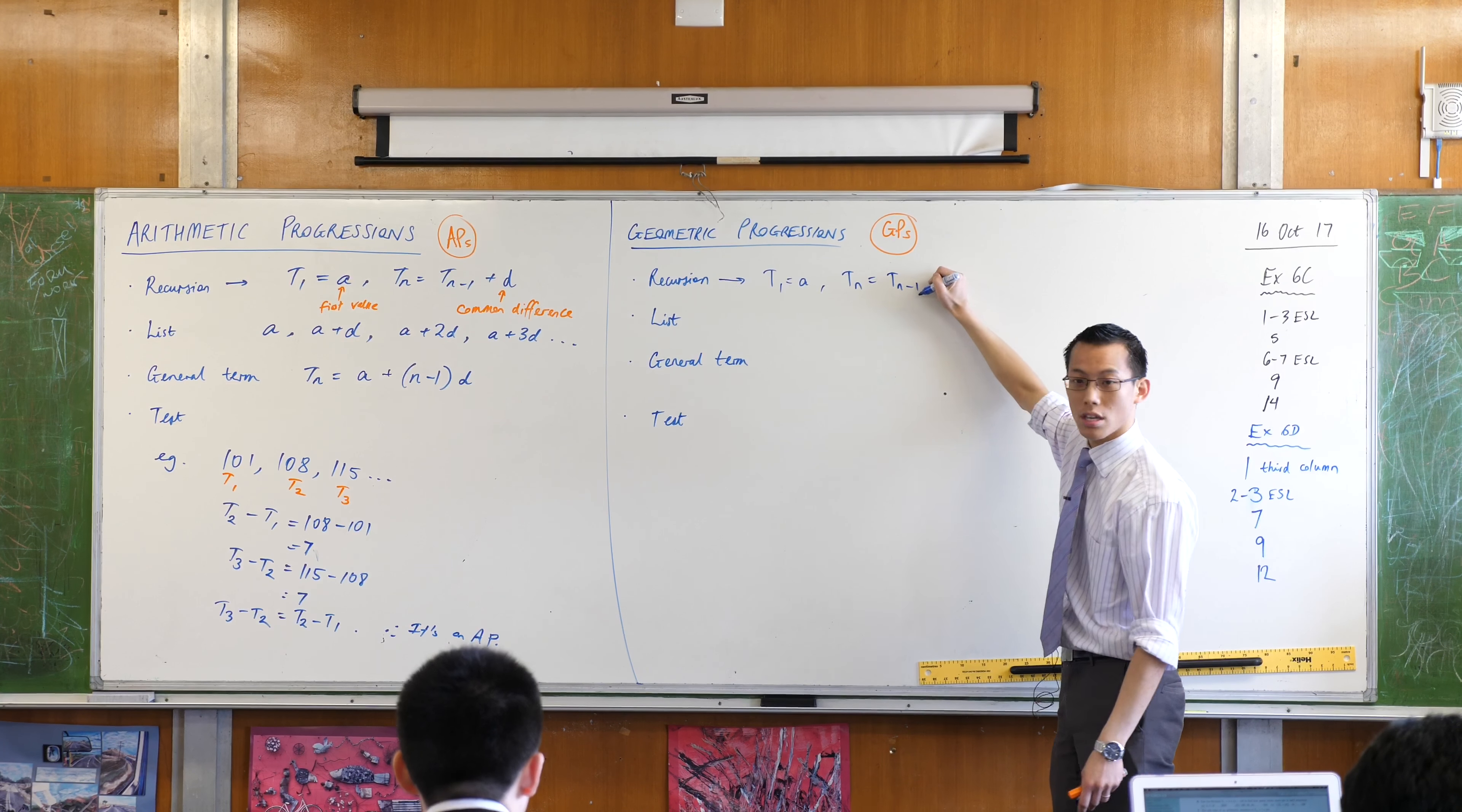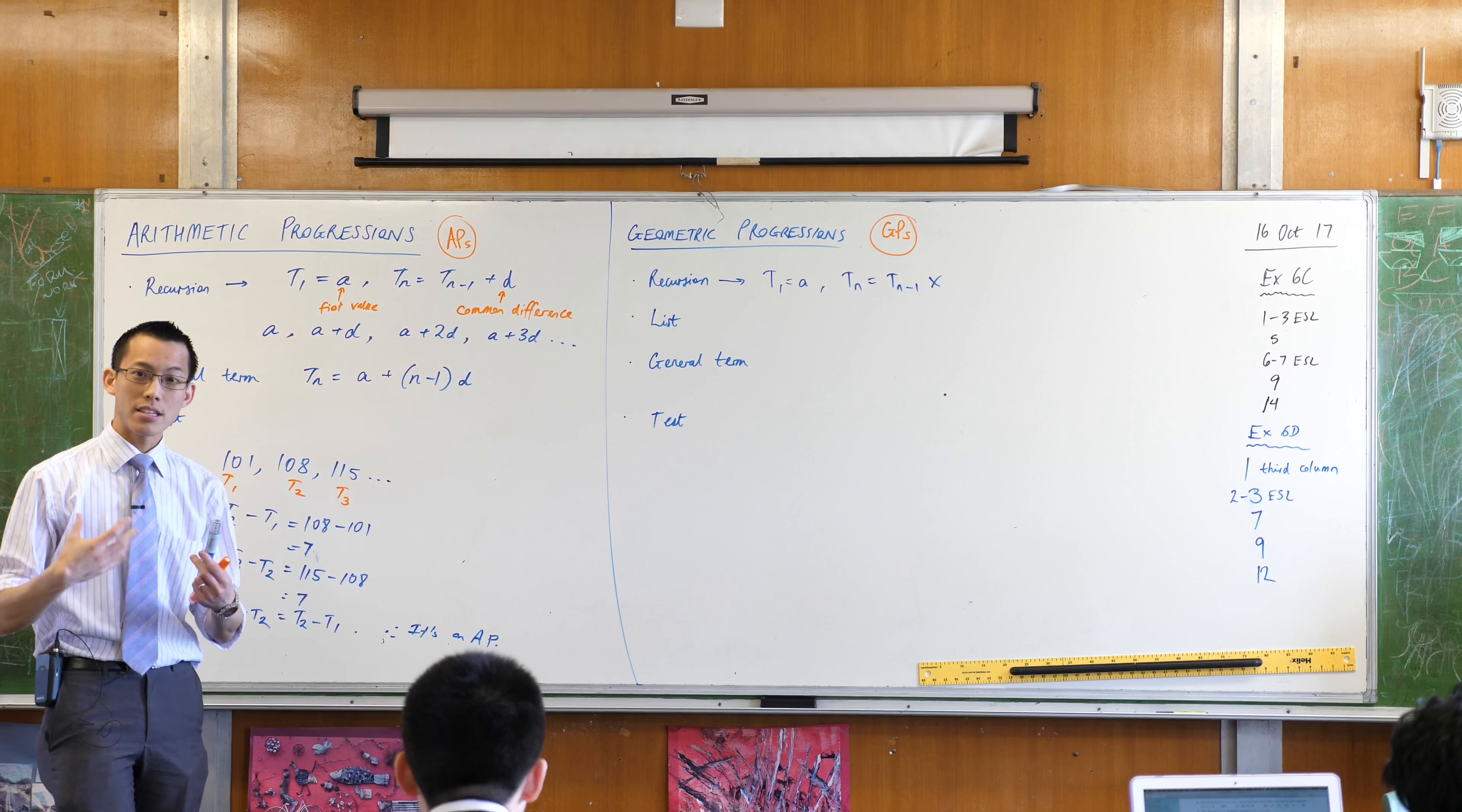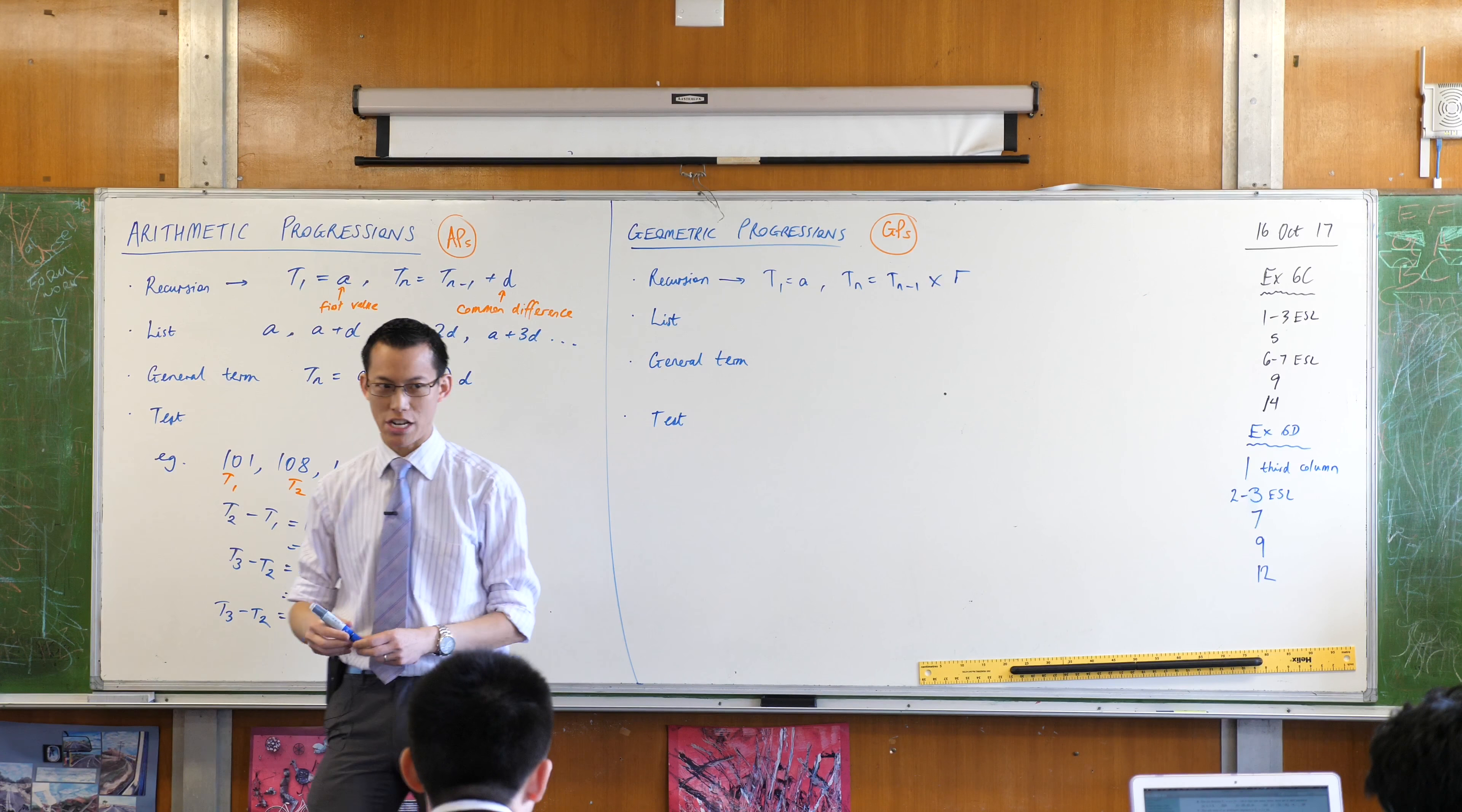Now it's not a difference anymore is it. It's not like oh every time there's a gap of two or three or negative eight. Since it's not a common difference, since you're multiplying by something, we indicate this with the letter R for common ratio.